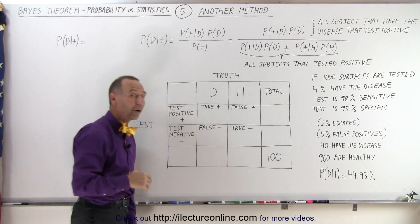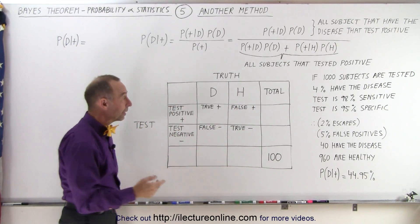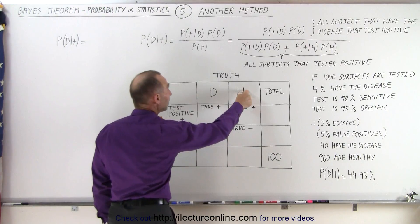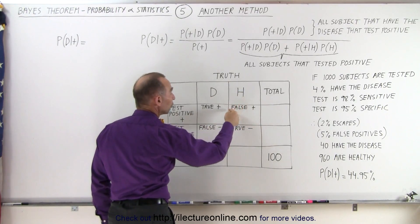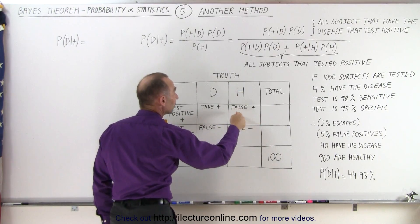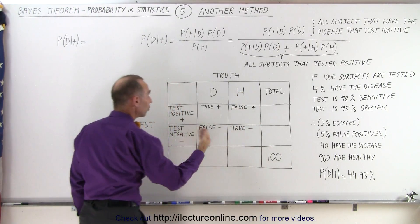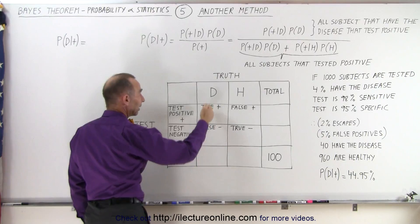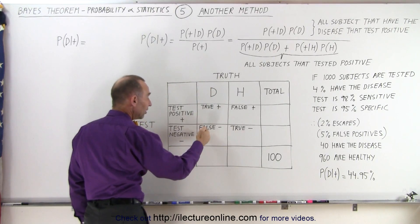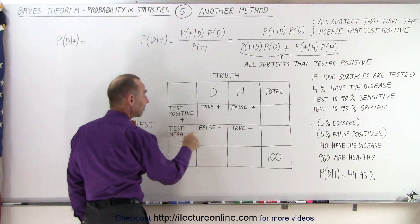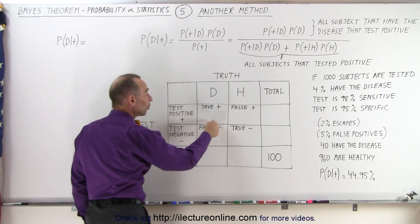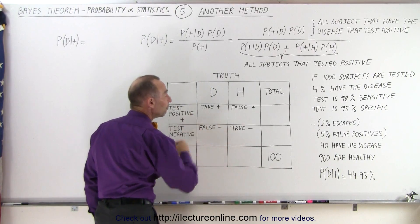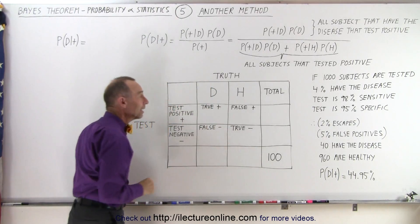But there are some who are healthy that test positive — those are called the false positives. And there are some who are diseased but test negative — those are called the false negatives.